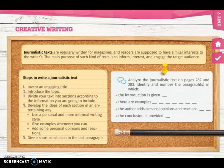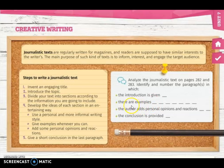On page 285 you will find creative writing. There is a text about journalistic texts and also some steps to write a journalistic text. In the first exercise, you have to analyze the journalistic texts on pages 282 and 283, then identify the number of the paragraphs in which the introduction is given — meaning you write the paragraph number. For example, if the introduction is in paragraph one, you write the number one. Then write the number of the paragraphs where examples are given — for example, numbers six, eleven, fourteen, and twelve.